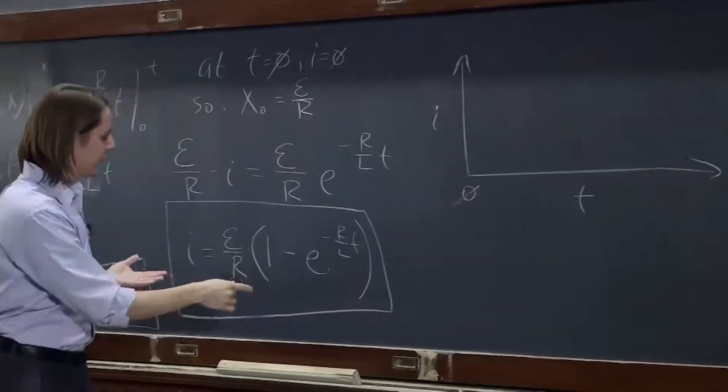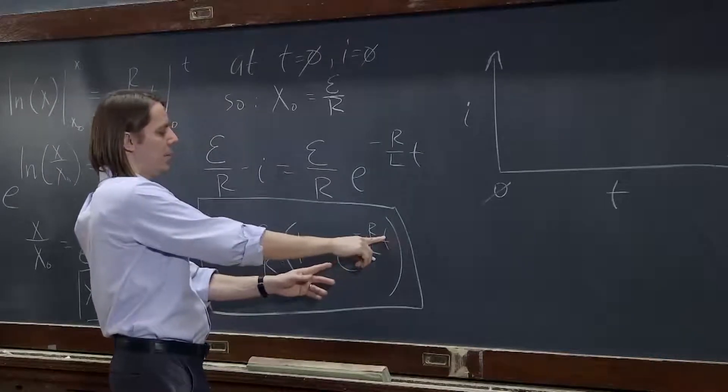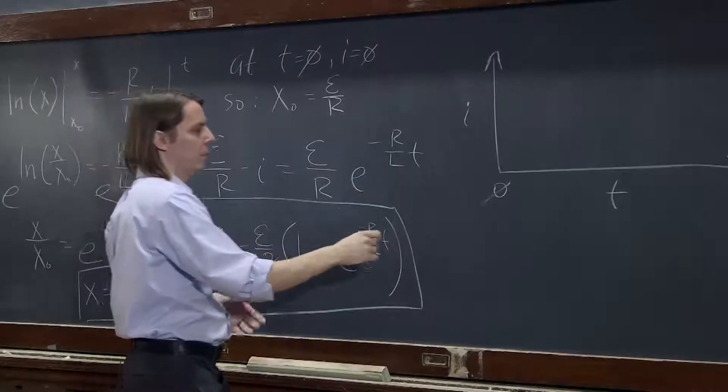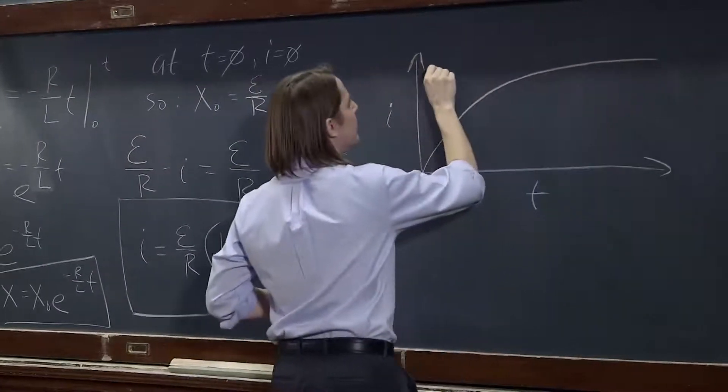here is the current. And if you plot a function like this, it starts out at 0, because e to the 0 is 1, so it's 1 minus 1 is 0. So it starts out at 0, and it goes up, and it kind of saturates to some value.